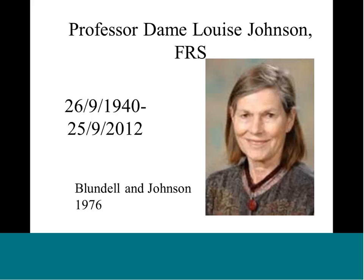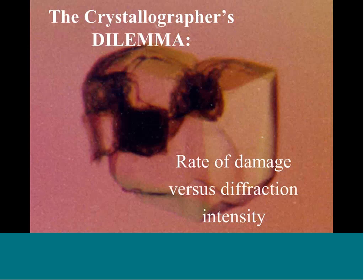Our great dilemma as macromolecular crystallographers is that if we give an unattenuated beam incident on our crystal, we'll damage it pretty fast — very fast at room temperature, and now at modern synchrotrons it can be quite fast at cryo temperatures as well. We get the high resolution data but then we kill the crystal. On the other hand, if we use an attenuated beam, we can get more data but at lower resolution.